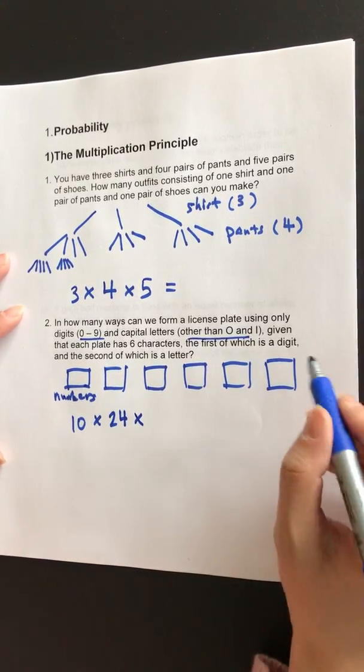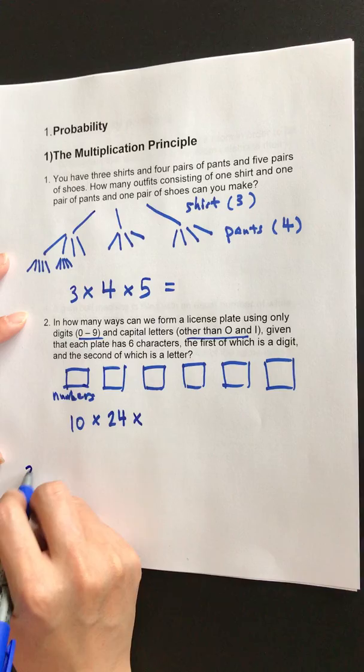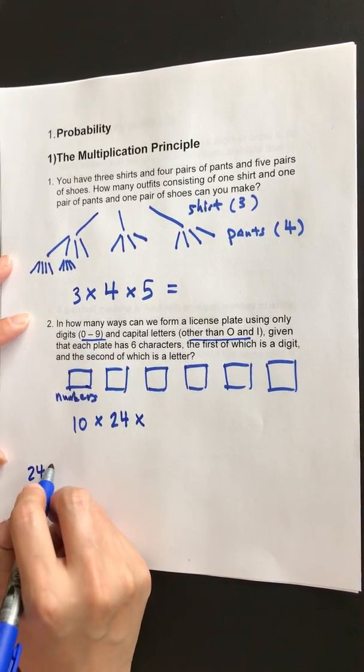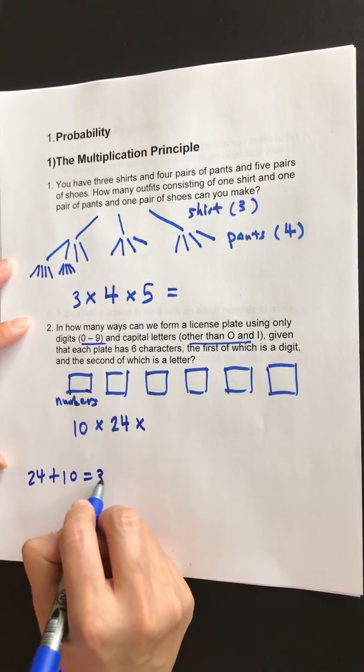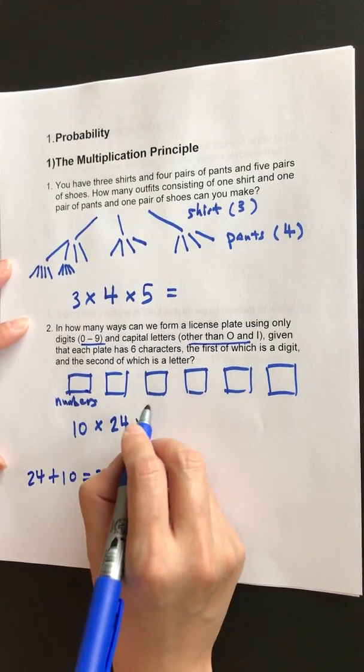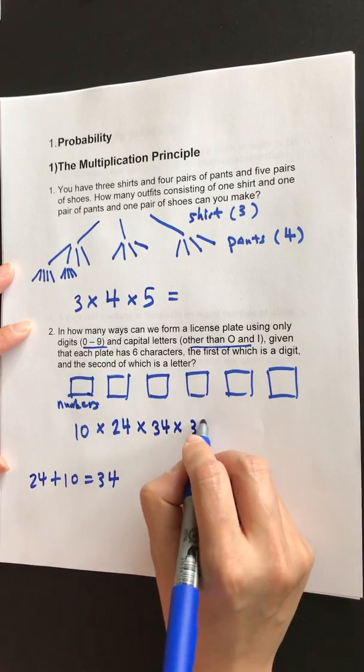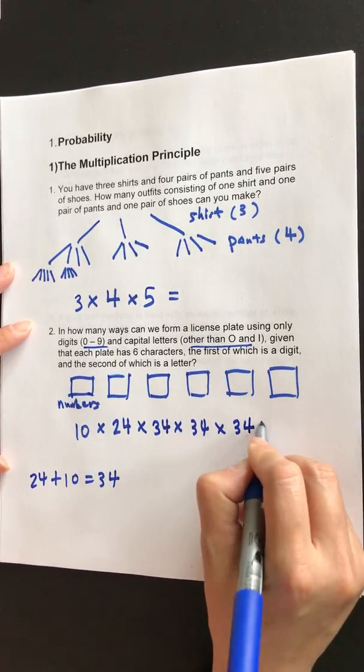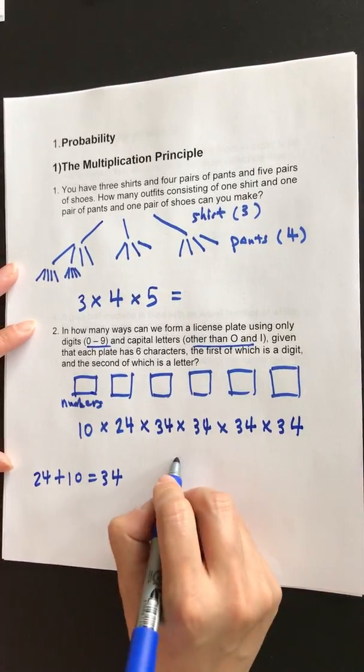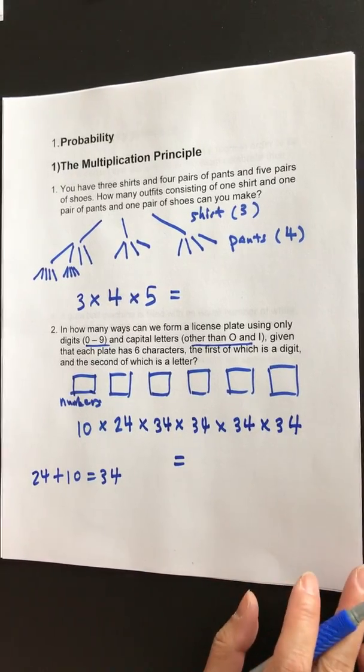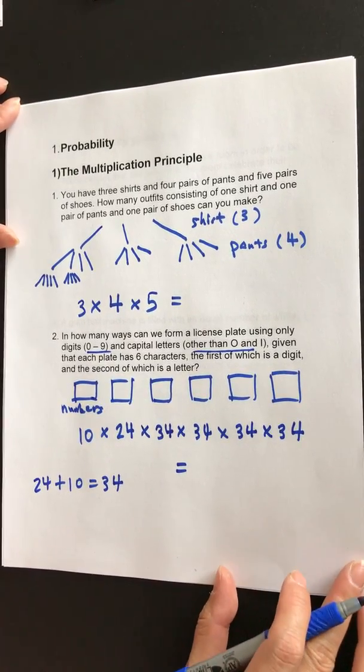So total is how many? You have 24 letters to choose, and you have ten numbers. So total, you've got 34 options. So for the third place, you have 34 options. This one, 34, 34, and 34. Carry out this multiplication is your final answer.